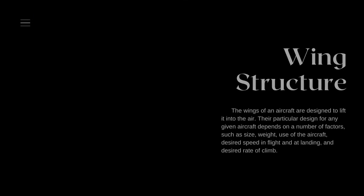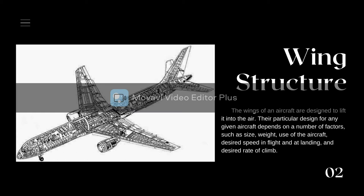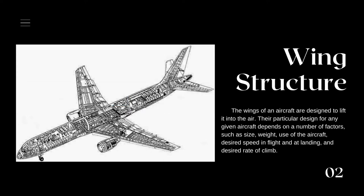Wing Structure. The wings of an aircraft are designed to lift it into the air. Their particular design for any given aircraft depends on a number of factors such as size, weight, use of the aircraft, desired speed in flight and at landing, and desired rate of climb.